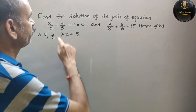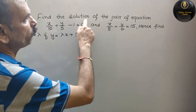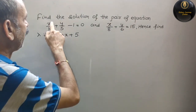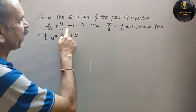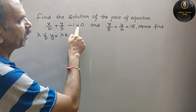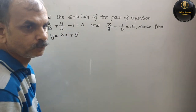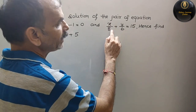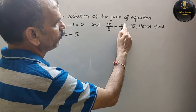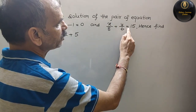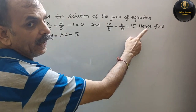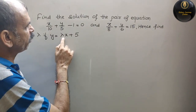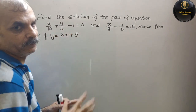Aapka question hai: find the solution of the pair of equations — x/10 + y/5 - 1 = 0 and x/8 + y/6 = 15. Hence, find lambda if y = lambda x + 5.